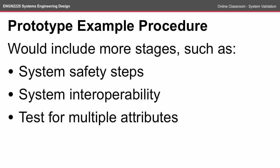If we were to take that proof of concept and look at the procedure for the prototype level, it would likely include more stages as you'd be looking at it at a slightly higher level. By the time you were able to test the prototype, you might need to include some more system safety steps — this might be because you've got the cutting subsystem working and it's got the blades on. You might also need to consider factors such as system interoperability. At the prototype stage, you might also be testing for multiple attributes, no longer testing each unit separately but testing a number of attributes within the same test.